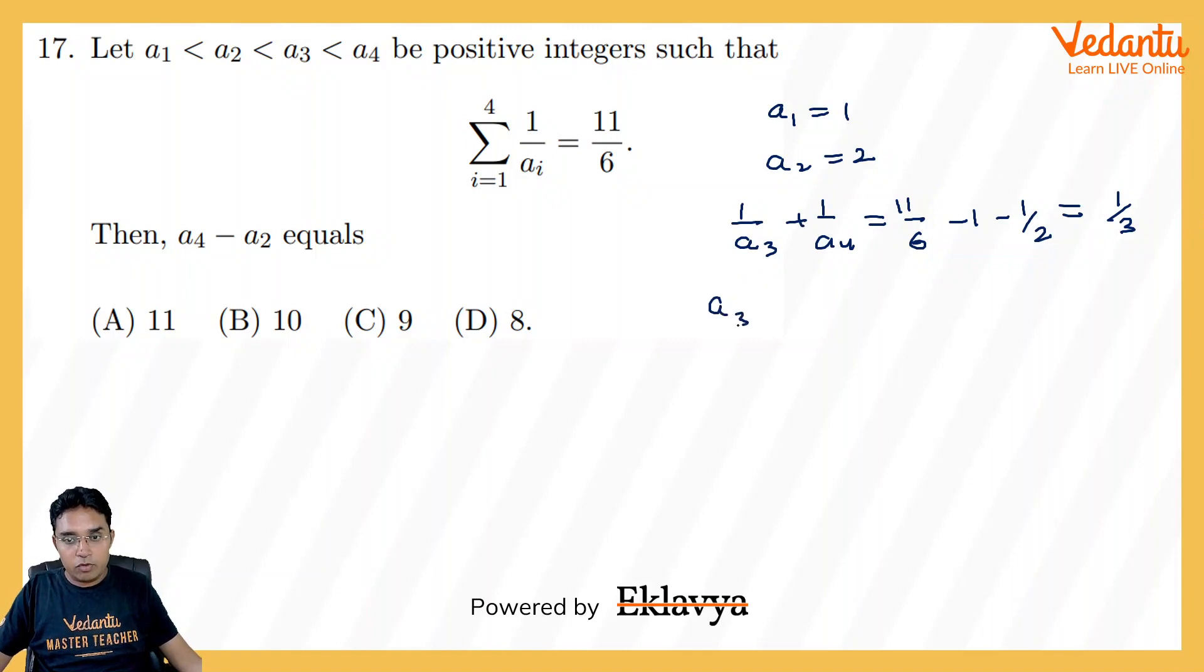Now my a3 could be 3 also, because a1 is 1, a2 is 2. But I think if I take a3 as 3, because if a3 becomes 3 then 1 upon a4 will become 0, as otherwise this 1 upon a4 will be 0. So that is not possible. So a3 cannot be 3, so a3 can be 4.